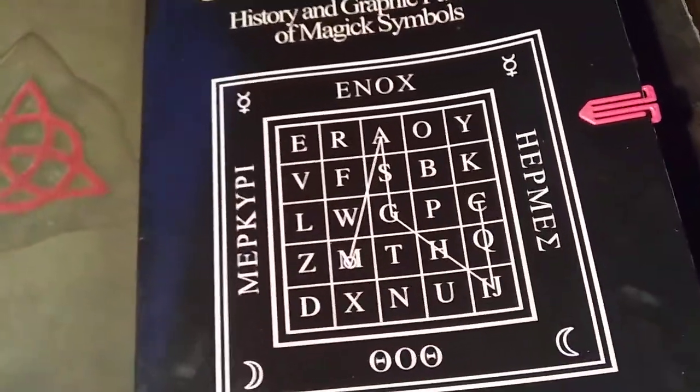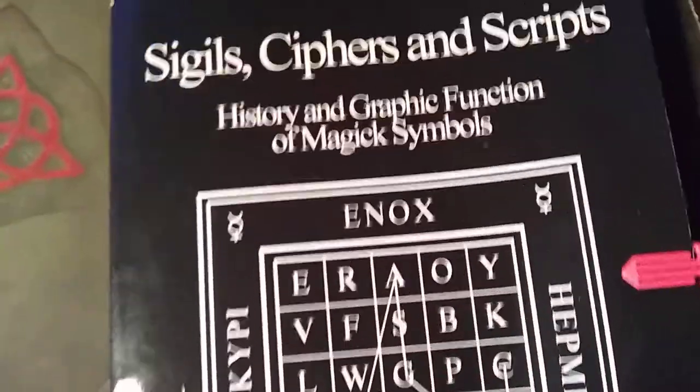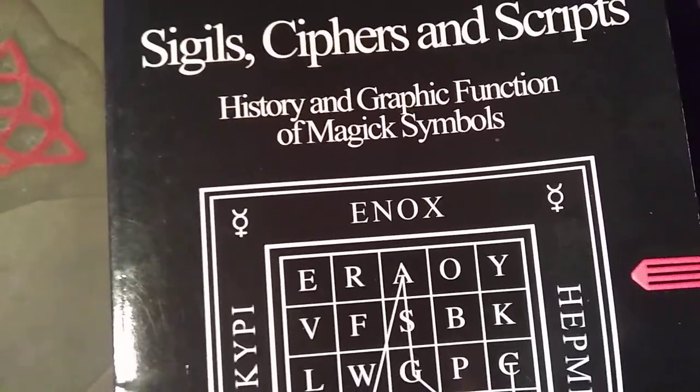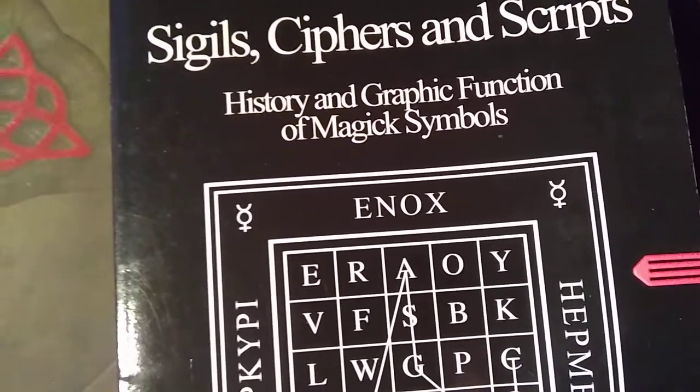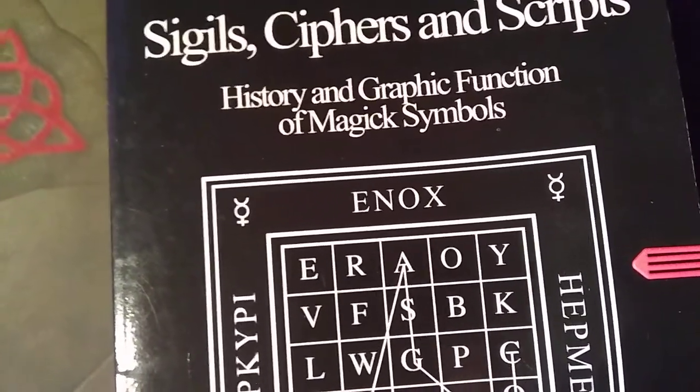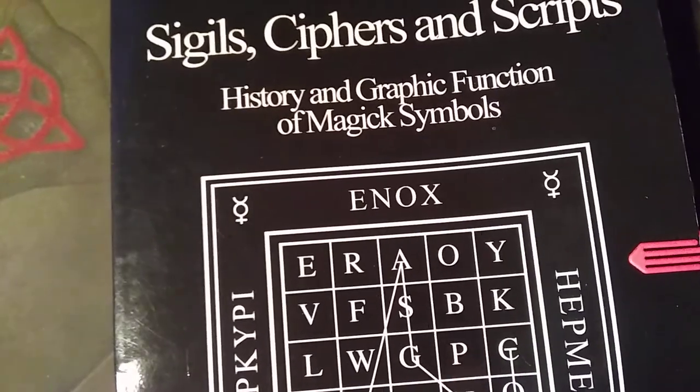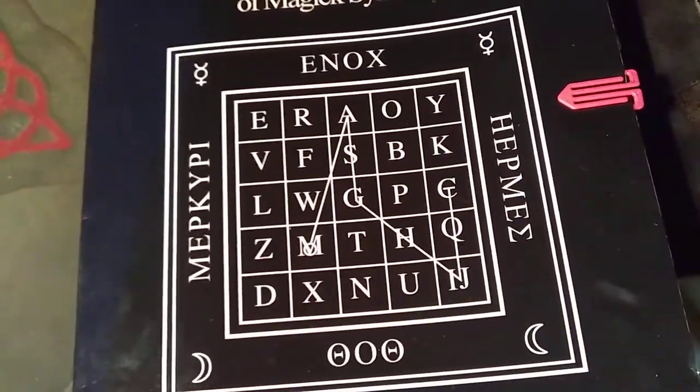Hello, this is me. I'm just doing a short little book review on the book Sigils, Ciphers and Scripts: History and Graphic Function of Magic Symbols by M.B. Jackson.